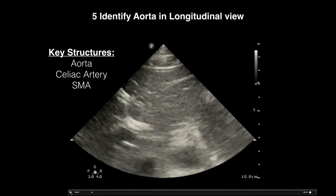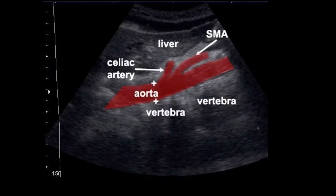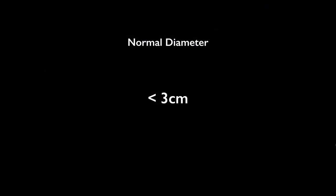When measuring, make sure you measure the abdominal aorta from outer wall to outer wall to include any thrombus or anything else that can enlarge the aorta. The normal diameter is less than three centimeters, and the emergency situation is when it gets above 5.5 centimeters. Everything between three and 5.5 centimeters depends on the patient's symptoms, vital signs, and how fast the AAA is enlarging.